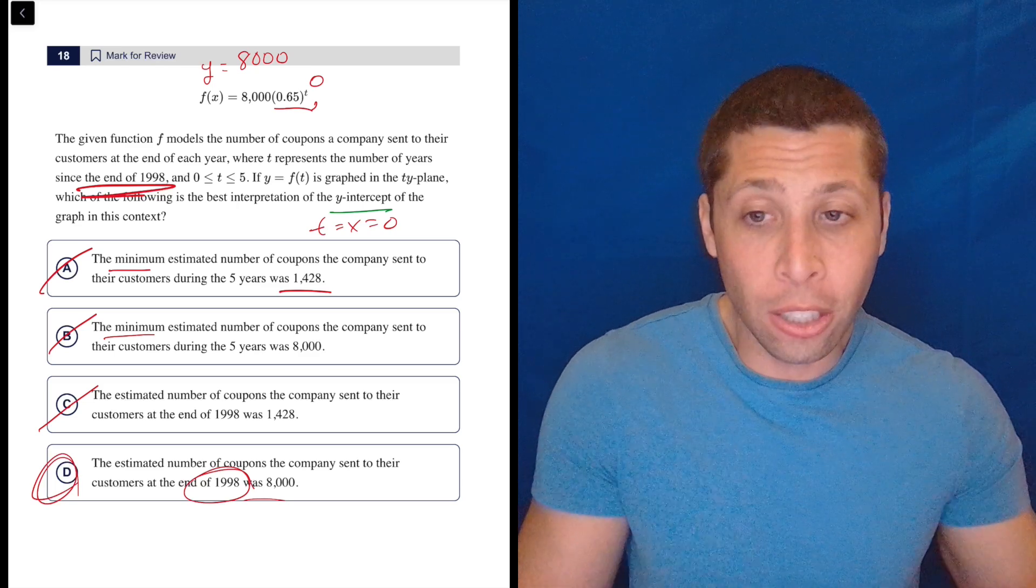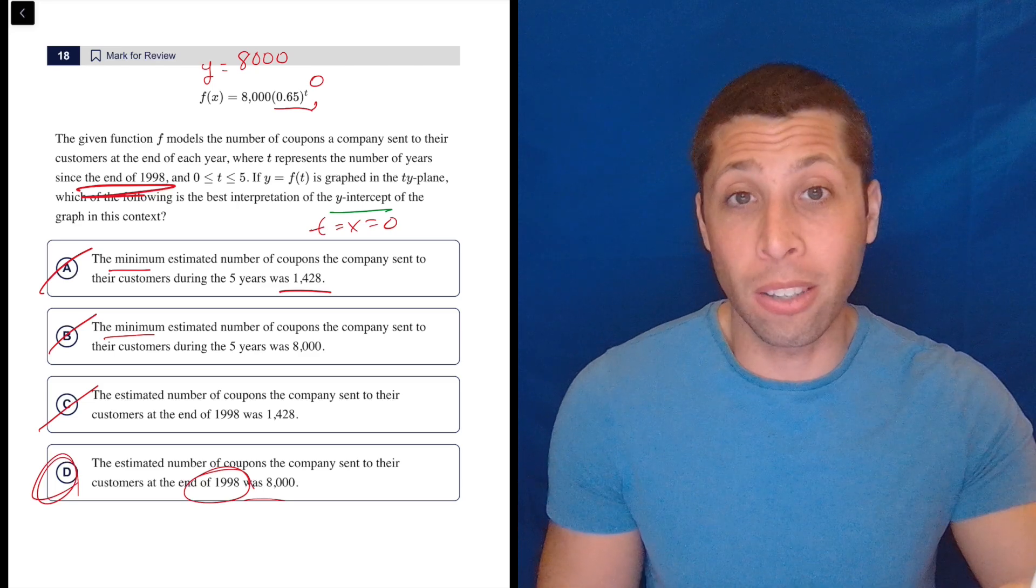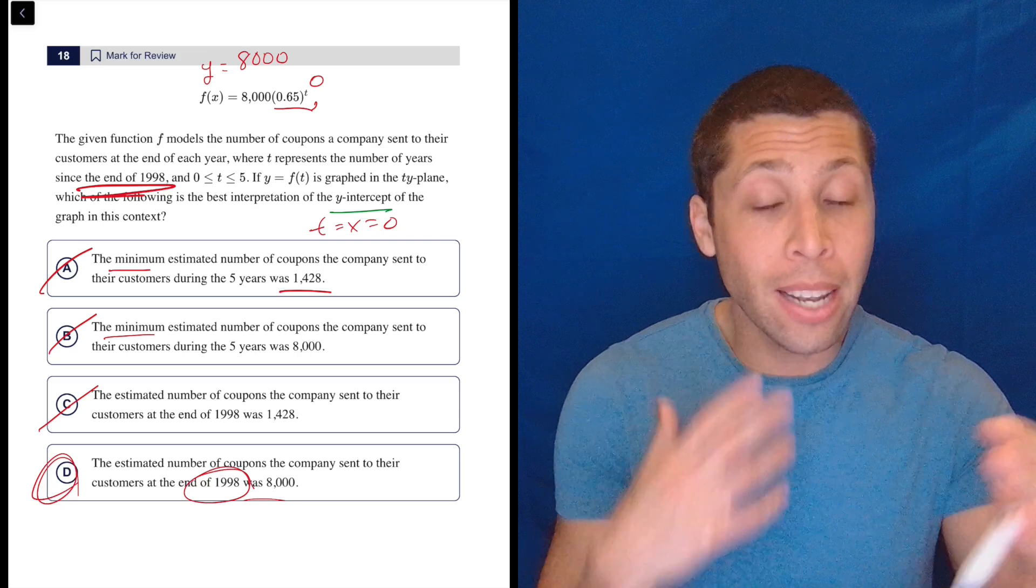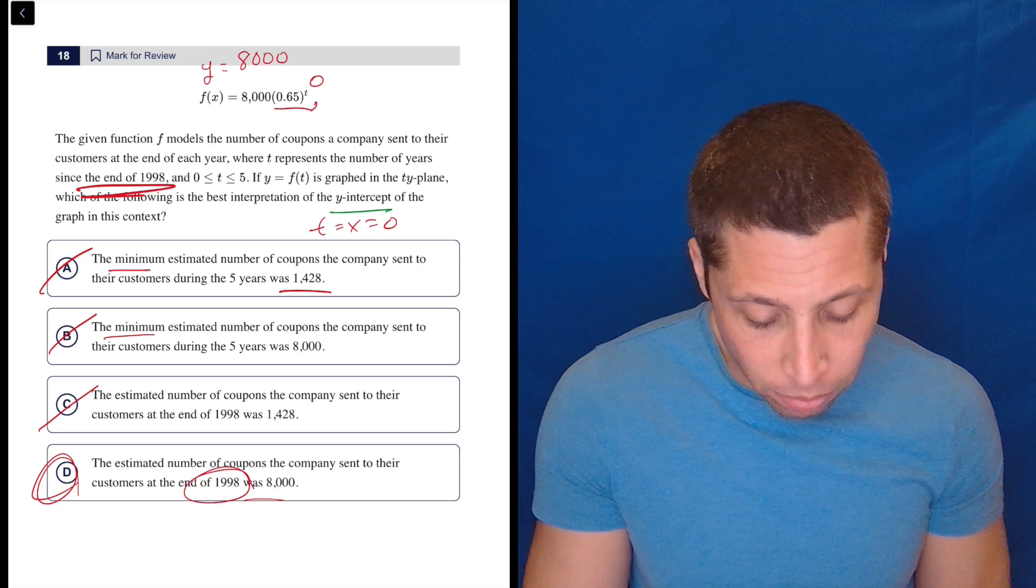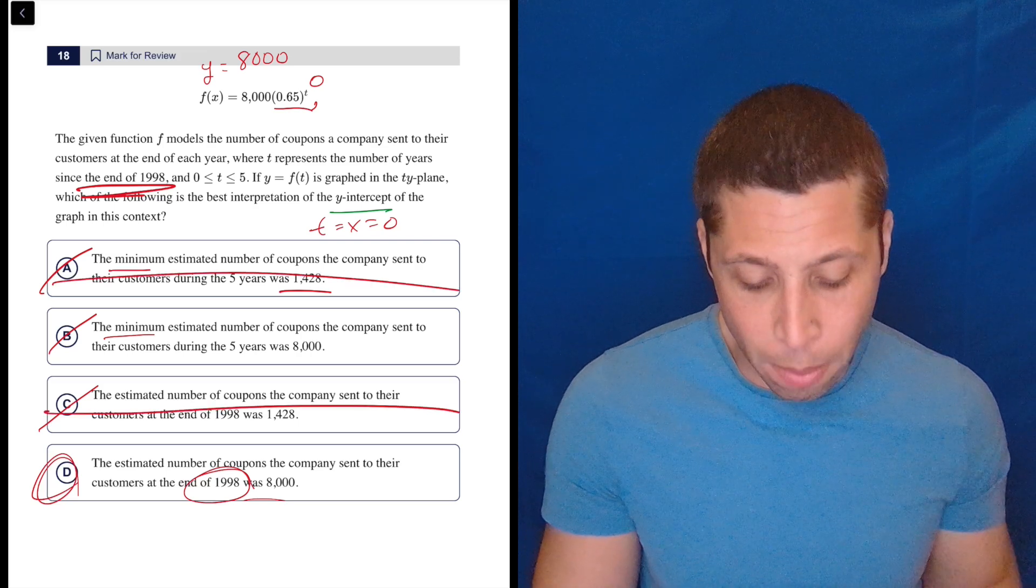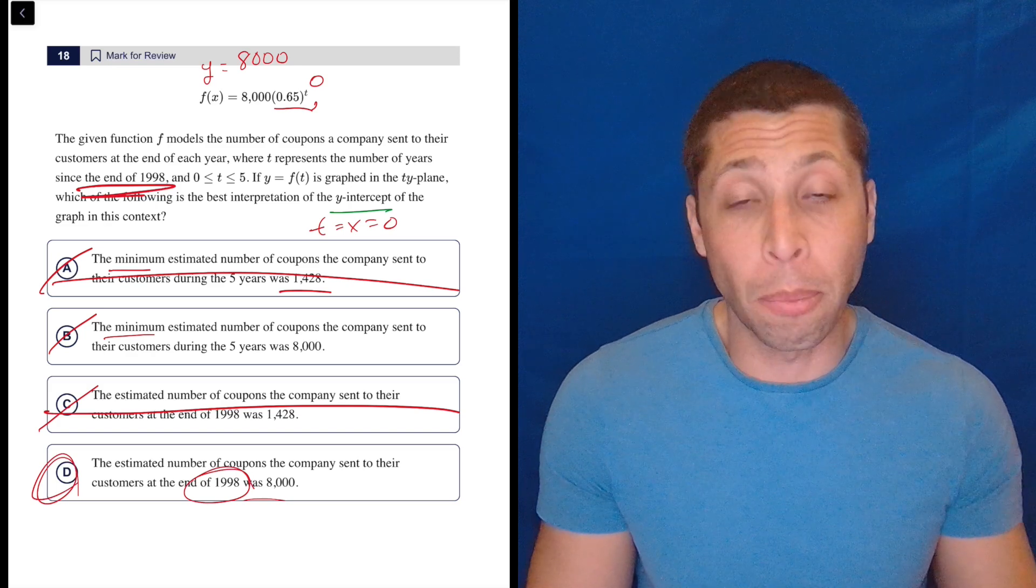And if you're unsure about that, they're telling you to find the y-intercept, they're telling you to plug in zero for t. Just do it and then try to understand it based on that. But at the very least, I think you would have eliminated C and A because where is that number even coming from? So you'd at least have doubled your odds of getting it right.